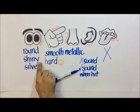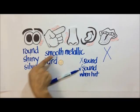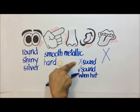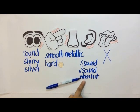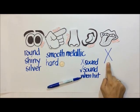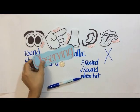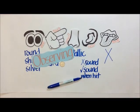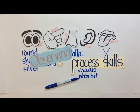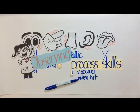The object is round, shiny, and silver. It is also smooth and hard, and has a metallic smell. It doesn't have any sound, but when you hit it with another object, it has sound. And we didn't use our sense of taste. Now what we just did is what we call observing, and it is a process skill which scientists use to study objects.